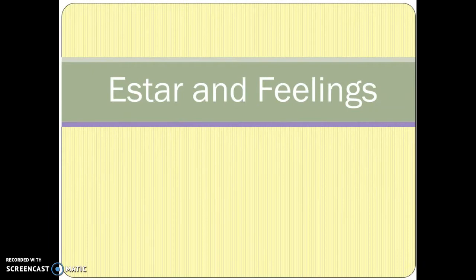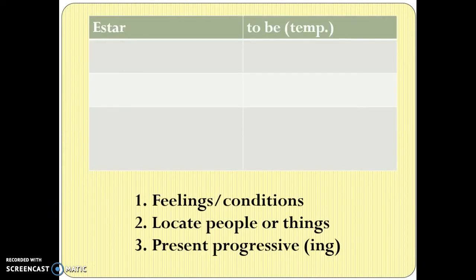Our next unit is on the verb 'estar' and its use with feelings. This verb means 'to be' in a temporary sense, because if you look at the uses of this verb, you use it when you're describing feelings or conditions. For example, you're feeling tired right now, you're feeling exhausted, you're feeling angry. Those things change minute to minute, maybe day to day. So that's a very temporary sort of thing.